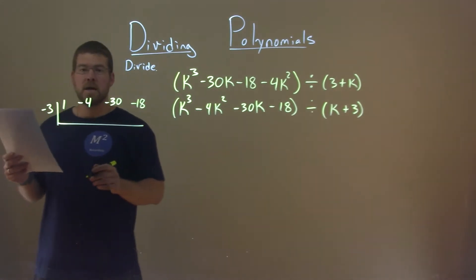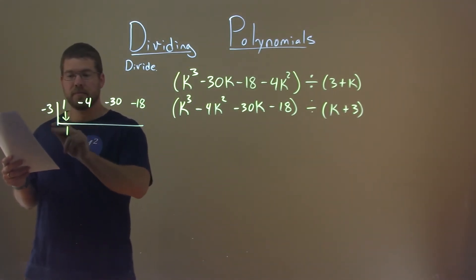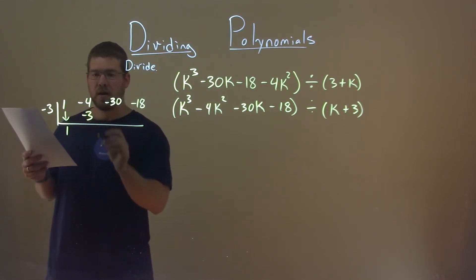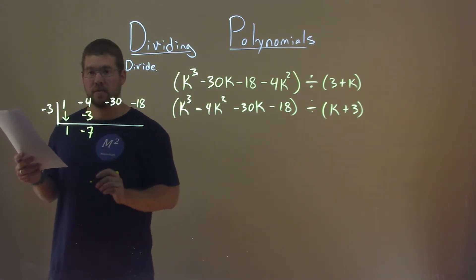Now we can divide synthetically. Bring down the 1. Negative 3 times 1 is negative 3. Negative 4 plus a negative 3 is negative 7.